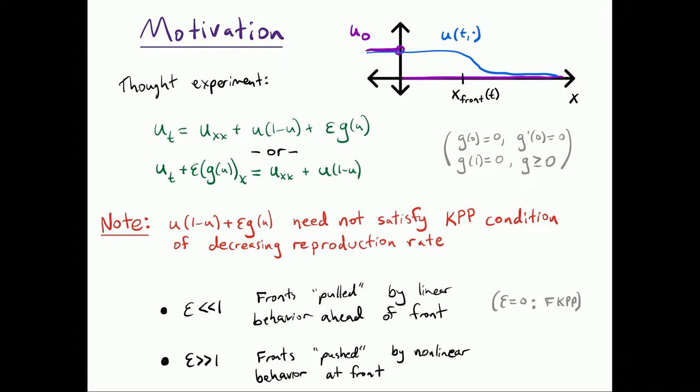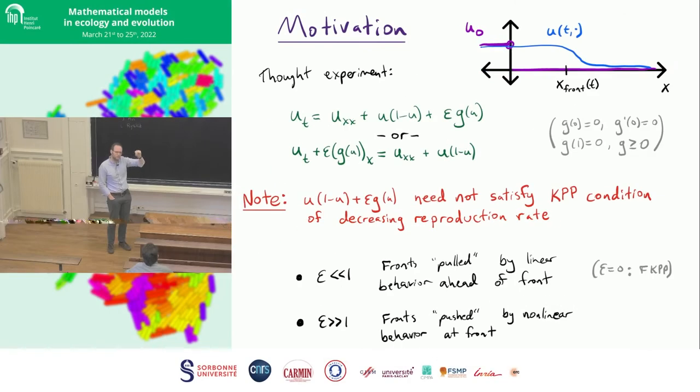You'll still have pulled fronts where the speed and the front is all governed by the linearized behavior at infinity. And as you increase epsilon, if you increase epsilon a ton, you have a complete change. The nonlinear behavior at the front pushes everything, which means that somewhere in the middle, you kind of switch from one to the other.